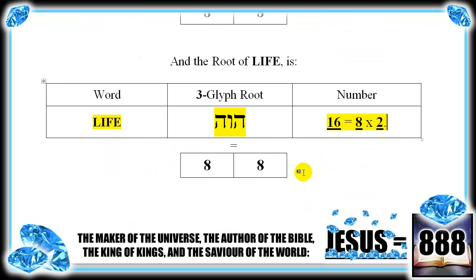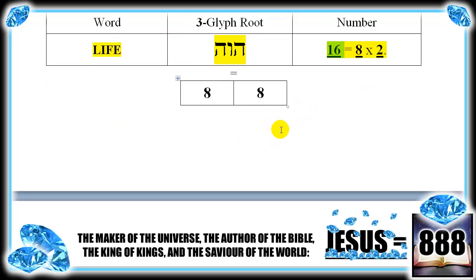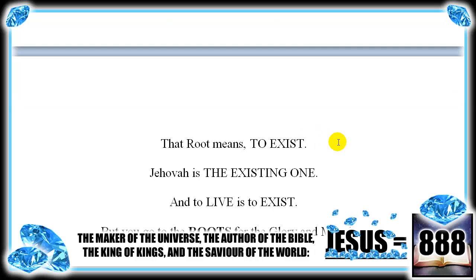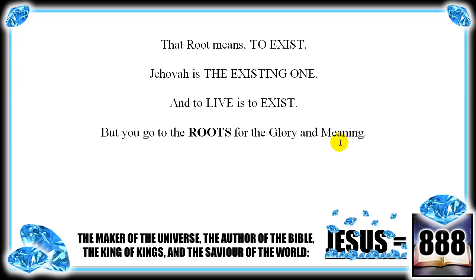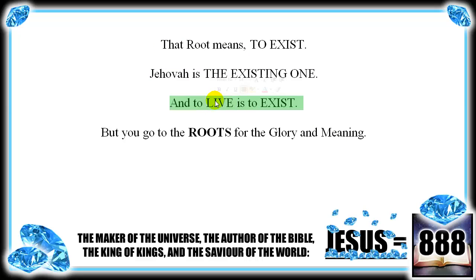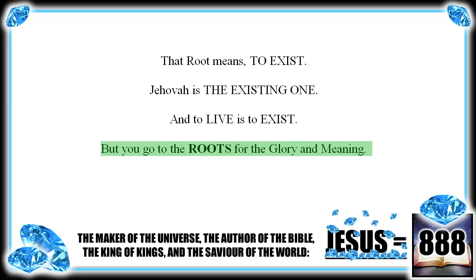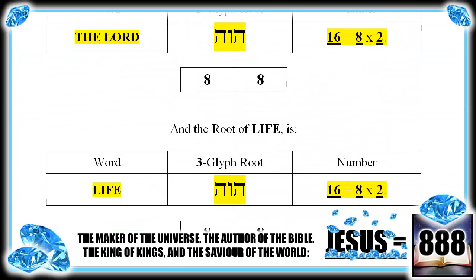Inasmuch as living is existing. By the way, we're all breathing O2 — pairs of 8s, 16 — to stay alive by his design. The root means to exist. Jehovah is the existing one, and to live is to exist. You go to the roots for the glory and the meaning.